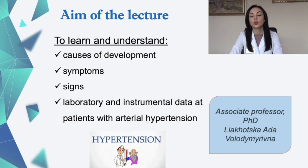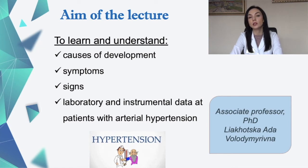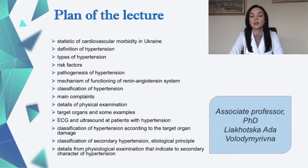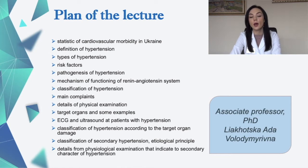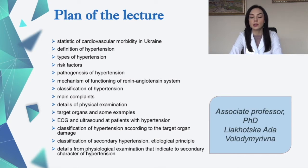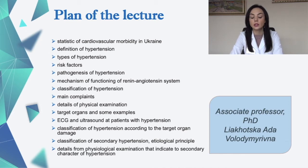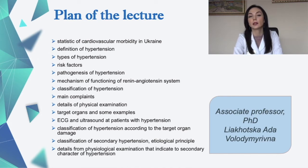The aim of the lecture is to learn and understand the causes of development, symptoms, signs, and laboratory and instrumental data in patients with arterial hypertension. The plan of the lecture covers: statistics and cardiovascular morbidity in Ukraine, definition of hypertension, types of hypertension, risk factors, classification of hypertension, details of physical examination, ECG and ultrasound in patients with hypertension, and details from physical examination that indicate the secondary character of hypertension.